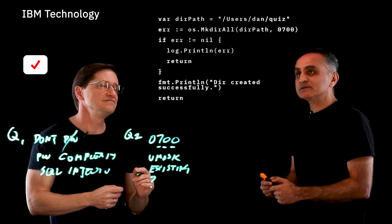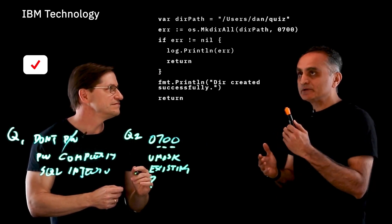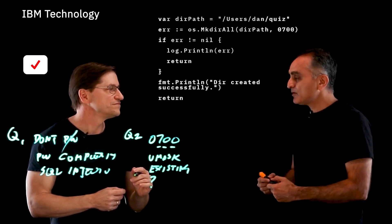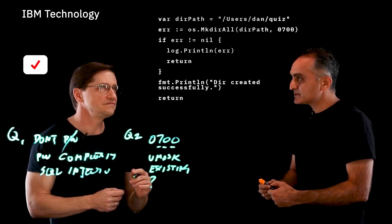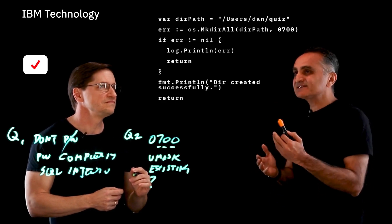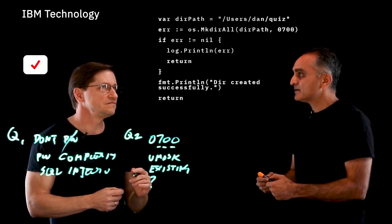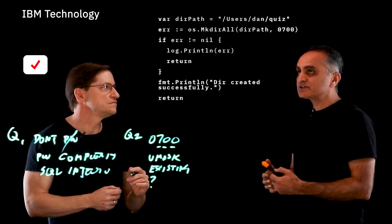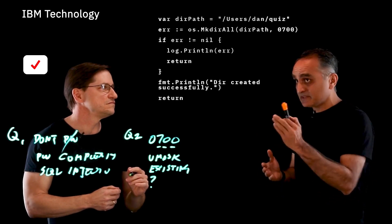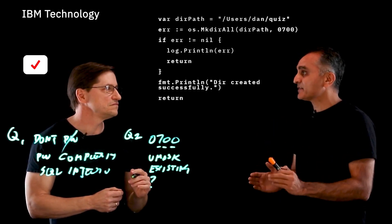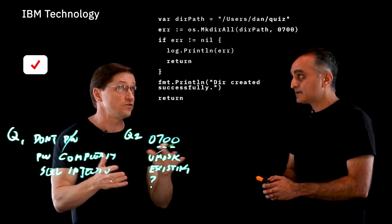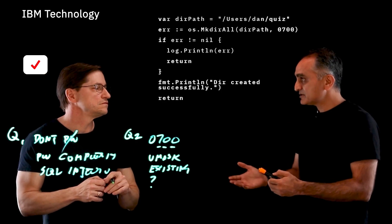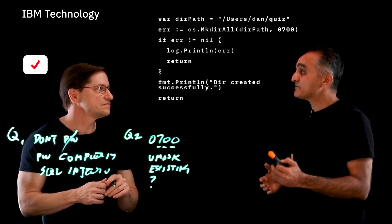The one big thing here is: every time you use any function — whether a Go package or third-party packages — you must understand how that function works before blindly using it. MkdirAll is a function that will create the directory with the desired permission if it's not there. But if it already exists, it'll just leave it alone and doesn't even return an error. So what's missing is: what if there's a directory already there with permissions 0777?